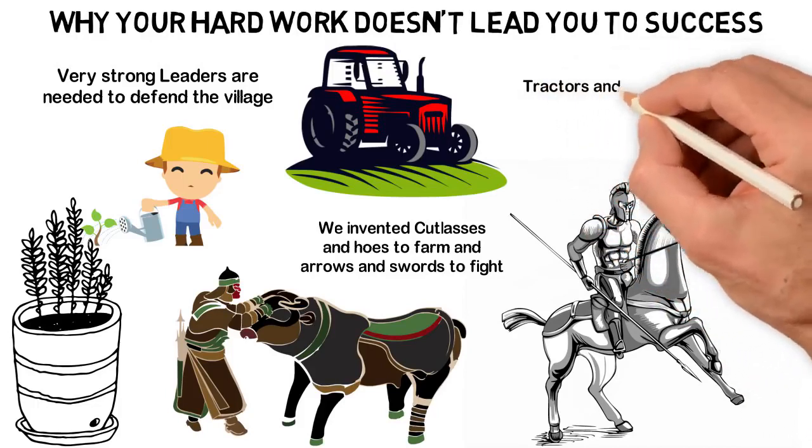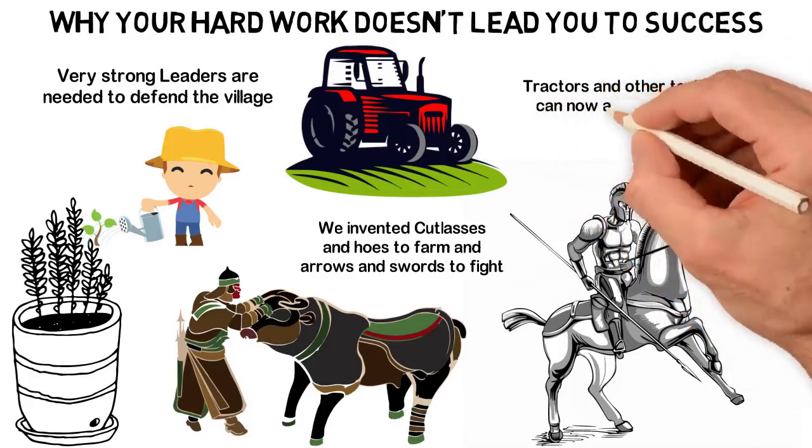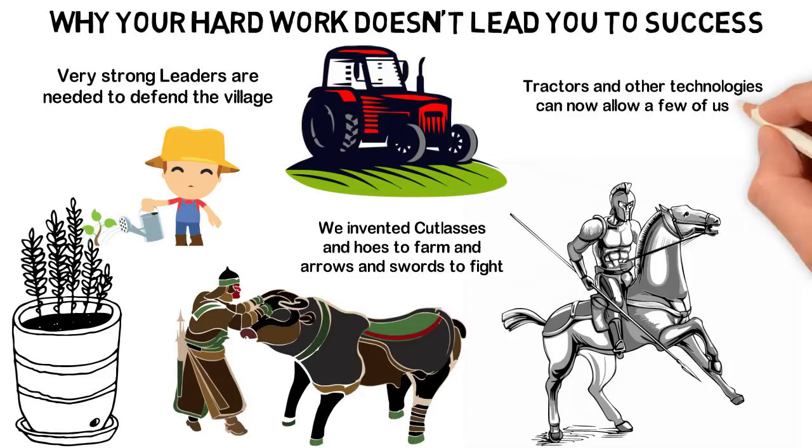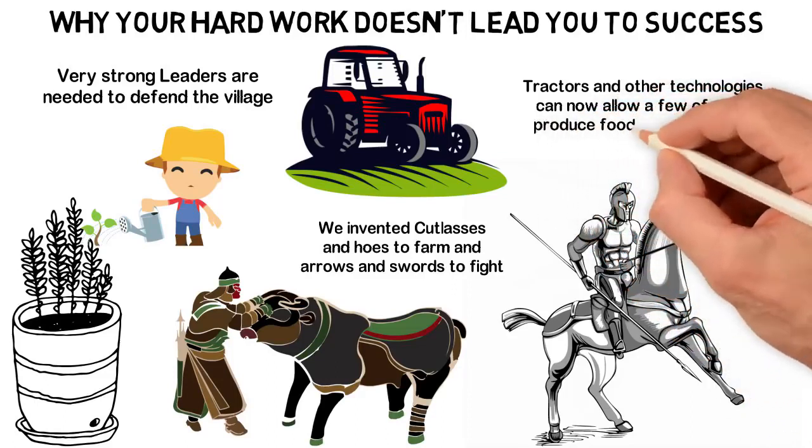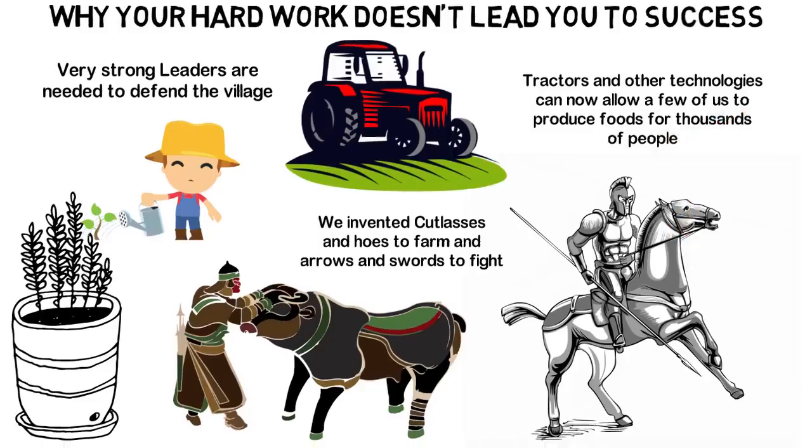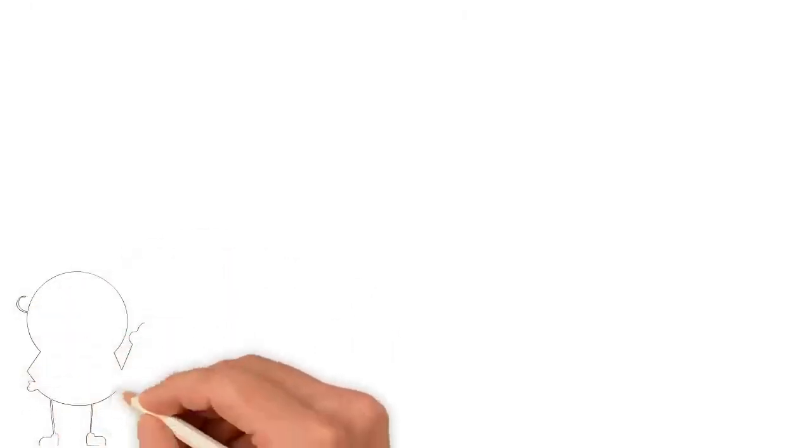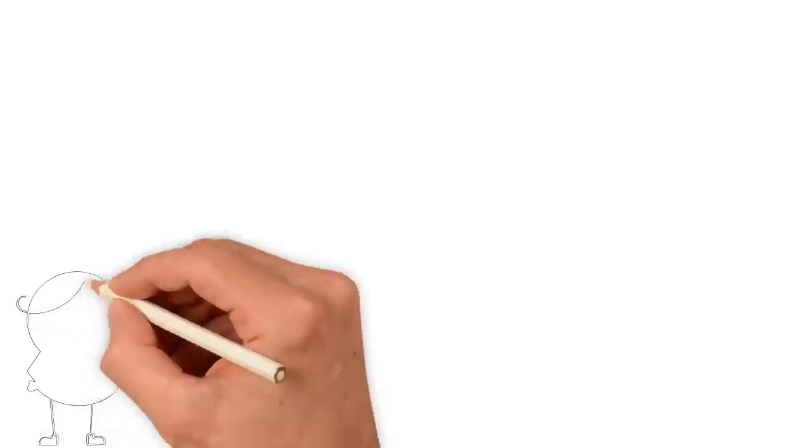About 200-250 years ago, however, we discovered even more advanced technologies we could use to farm. Now, we have tractors and other technologies that could allow a few of us to produce the food for thousands of people. We call this the agricultural revolution and it should make us work less. But again, right in the corner was an industrial revolution.